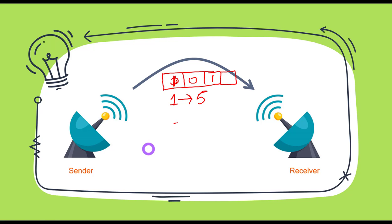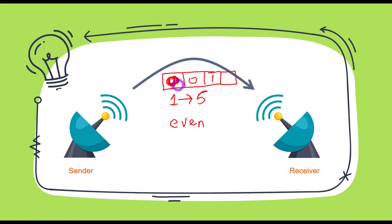Let's say we are talking about even parity right now. When we are sending a three-bit or any bit number, we first check the number of ones in it. While sending the number, we make sure that the number of ones should be even. So if the number of ones are even, nothing is written in the parity bit — it's zero. But if the number of ones are odd, which they are in the case of 001, then we put a one in the parity bit.